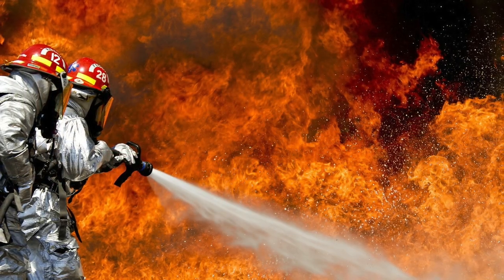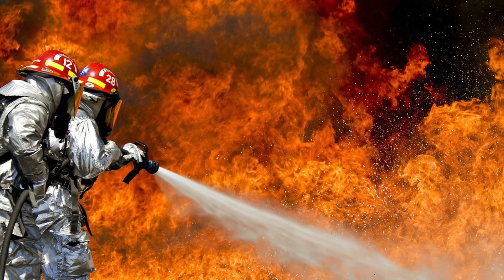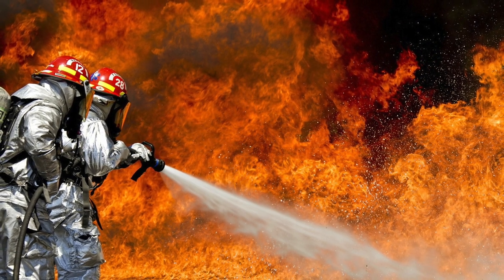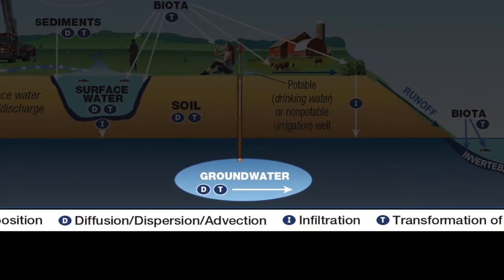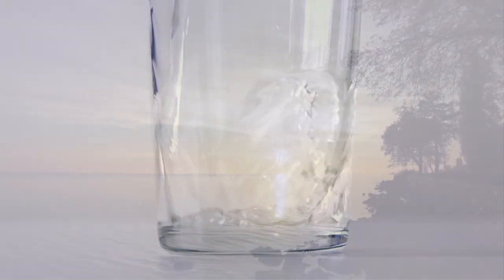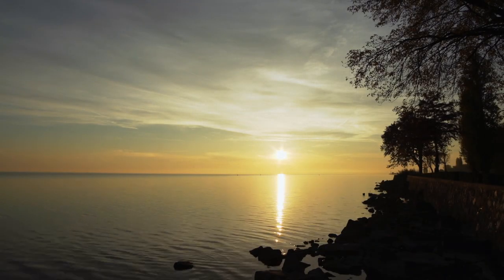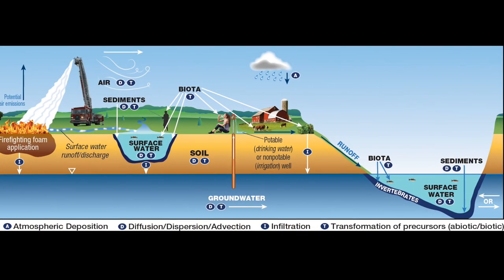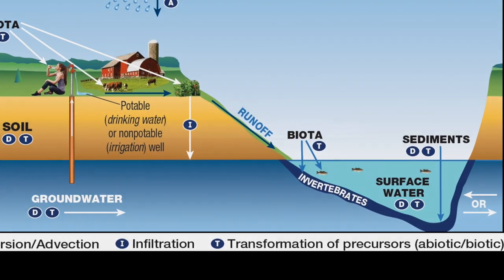As the primary use of AFFF is for extinguishing liquid chemical fires, those chemicals also may remain as co-contaminants at the AFFF site. Once in groundwater, PFAS may migrate to receptors like drinking water wells or enter the sediment and surface water of nearby water bodies. Surface water transport and groundwater-surface water interactions can result in PFAS contamination large distances away from the original release site.